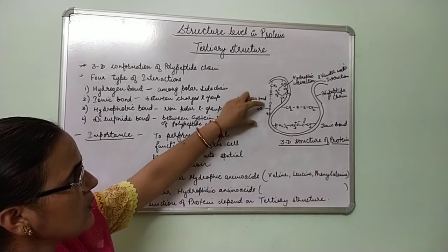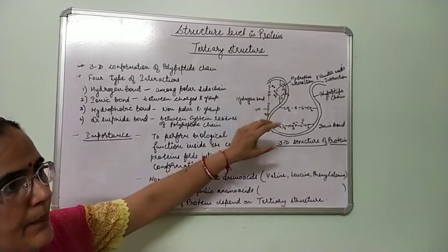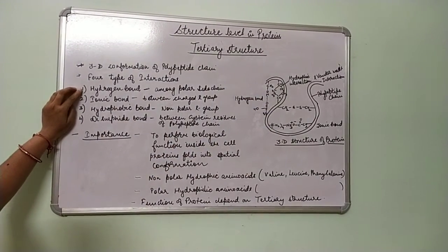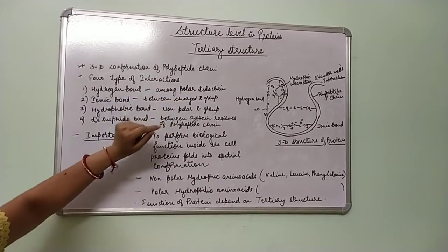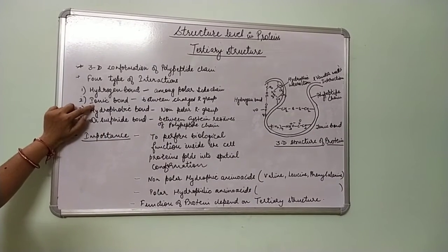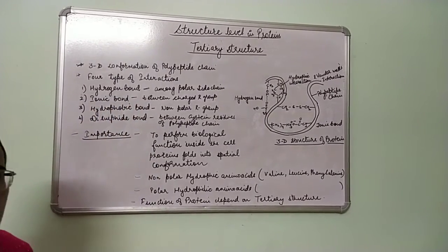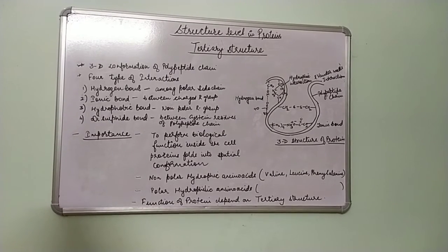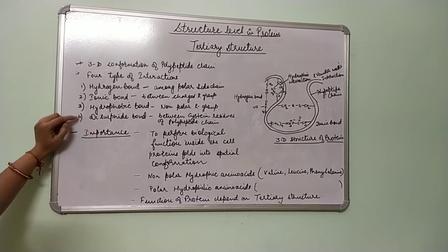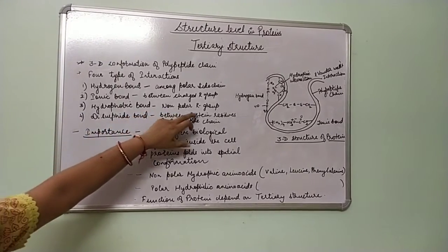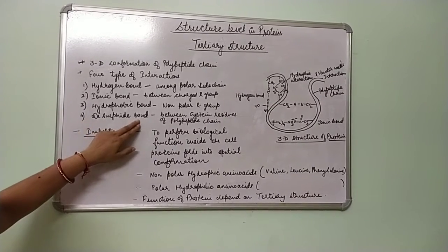The main types of bonding interactions are: first, hydrogen bonds, which occur among the polar side chains of amino acids; second, ionic bonds, formed between charged R group amino acids — some amino acids are acidic and some are basic in nature; and third, hydrophobic bonds, formed between amino acids having non-polar R groups.